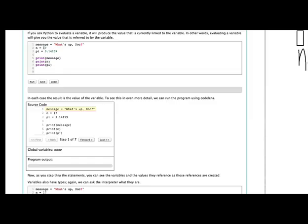And we'll see in our active code here, we have the name message and the assignment token equals, and then we have a string, what's up doc. Here we have a simple name N and the assignment operator and the number 17. And here we have a name PI and the assignment operator, and then the value 3.14159.